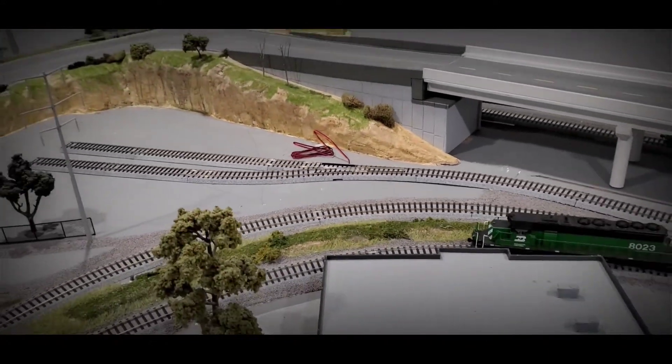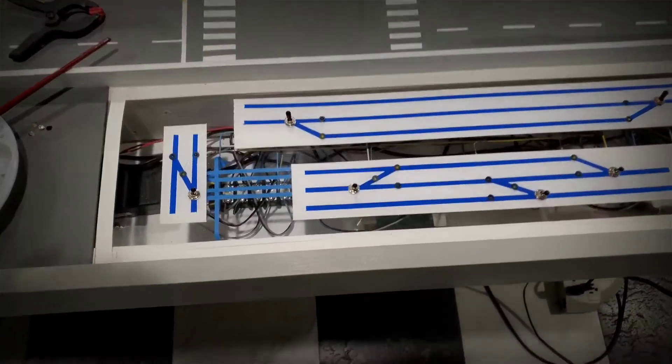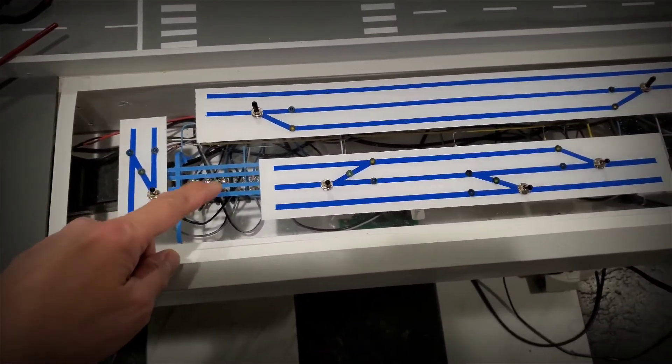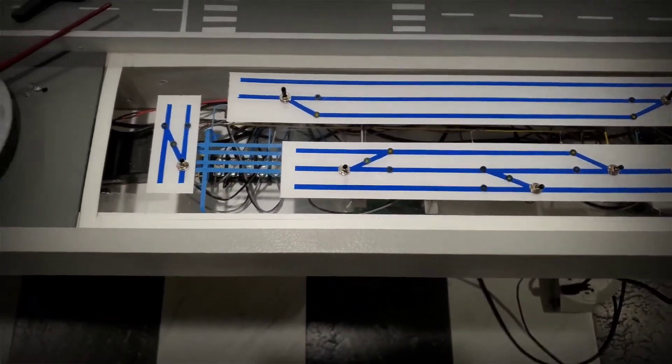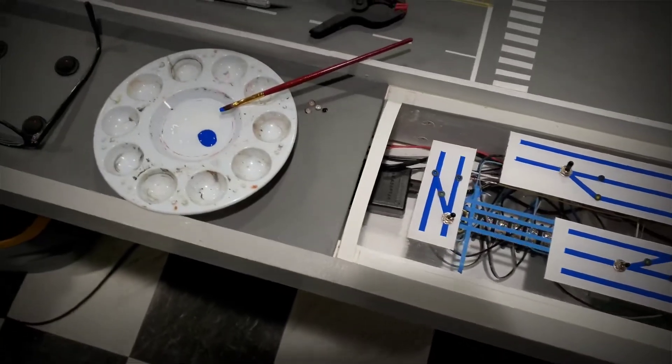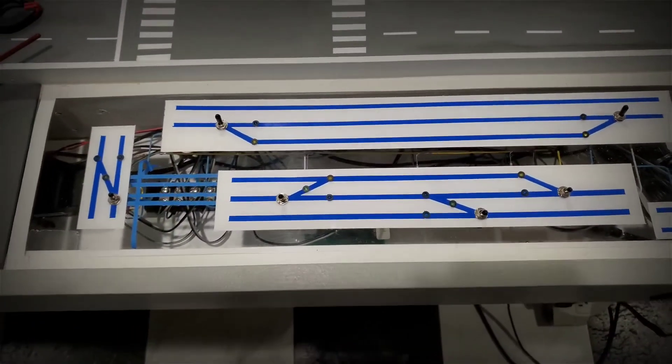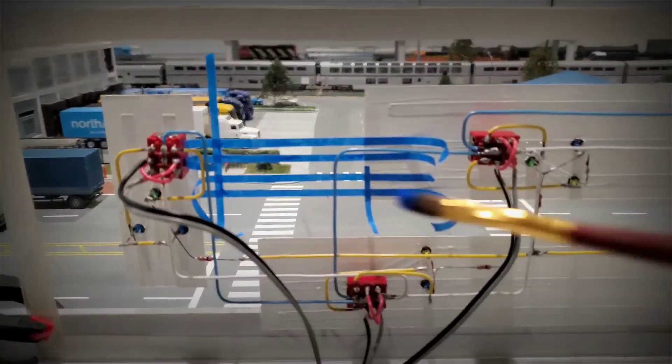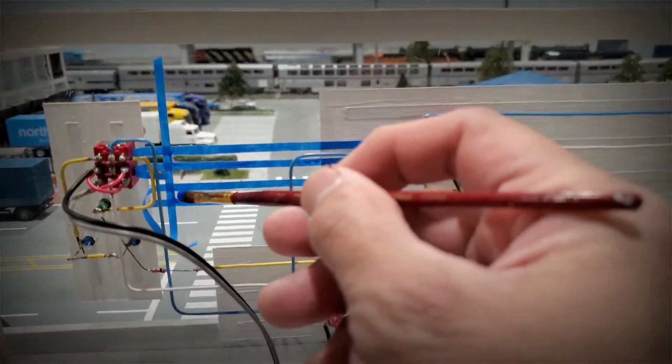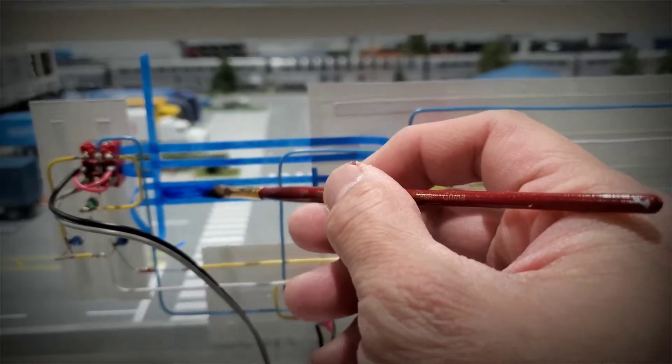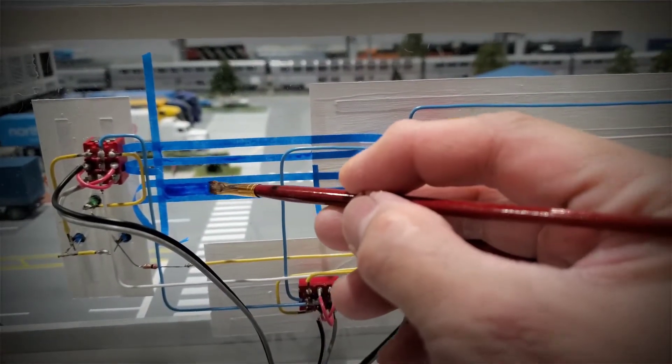In order to do that I will have to install this number four Kato electric turnout to enable the locomotives to switch tracks when going in and out of the building. I will also need to add a new switch here to control the new turnout, and so that's why I thought it will be a good opportunity for me to show you how I made my control panel.